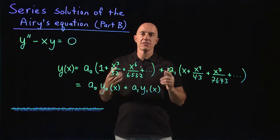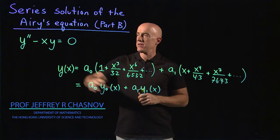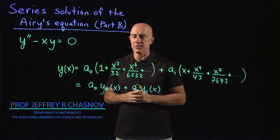In the last video, we solved the Airy's equation, y double prime minus xy equals 0.